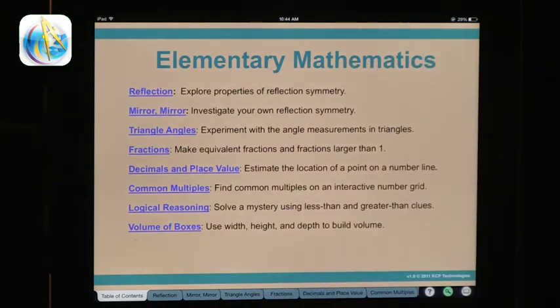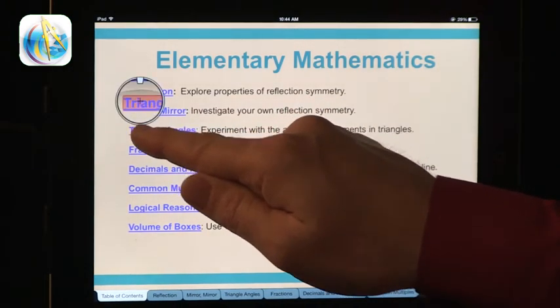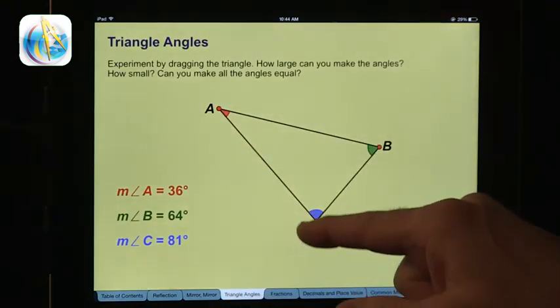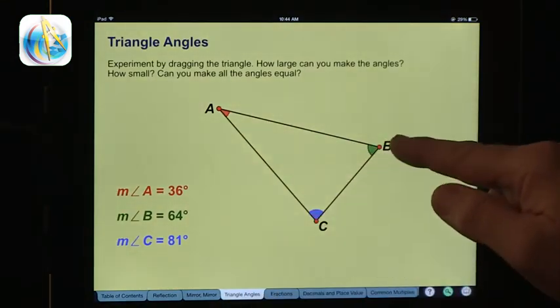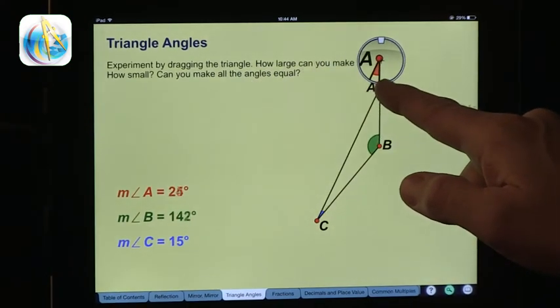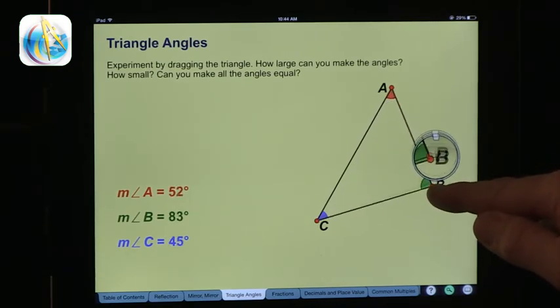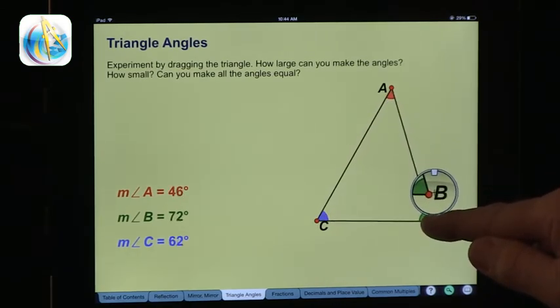So if you go to elementary math, what you can find is these are the topics that are covered. So let's, for example, look at triangle and angles. This gives you the triangle and the measurement of the angles. And as you move and manipulate these around, you can see that they are constantly 180 in total.